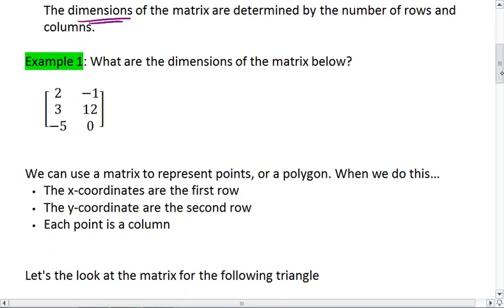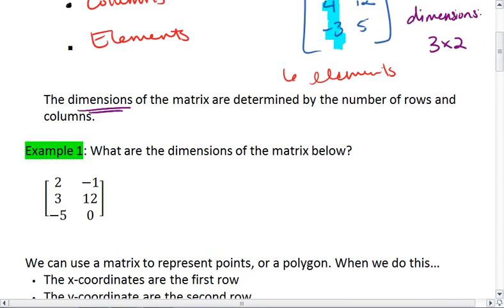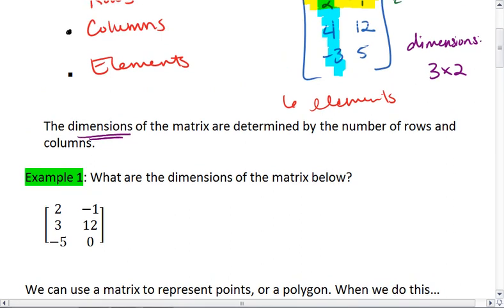Here we have an example. What are the dimensions of the matrix below? Well, it's actually just like the one we had above. We have 3 rows and 2 columns. So, this is a 3 by 2 matrix.